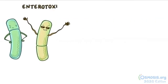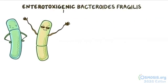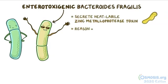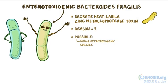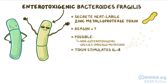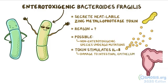There are some strains of Bacteroides fragilis called enterotoxigenic Bacteroides fragilis, which secrete a heat-labile zinc metalloprotease toxin. The reason behind this is not well understood, but it's possible that non-enterotoxigenic species that normally reside in the colon undergo mutations that make them more virulent. This toxin stimulates IL-8 secretion, which is a pro-inflammatory cytokine that causes damage to the intestinal epithelium, so fluid and chloride are secreted into the intestinal lumen, causing inflammatory diarrhea.